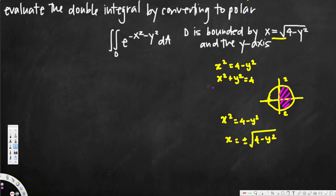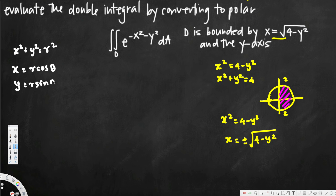Now we also have to convert this one into polar coordinates. To convert this, we are going to use the identity x squared plus y squared equals r squared. If you want to know how we derive this: in polar coordinates, x is equal to r cos theta and y is equal to r sine theta. If you square both of them, this is going to be x squared plus y squared, and if you square both and add them, this is also going to be r squared.